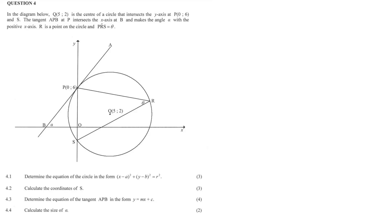Question 4.1. In the diagram below, Q has the coordinates x equals 5 and y equals 2, and it's the center of a circle that intersects the y-axis at P, P having coordinates x equals 0 and y equals 6 and S. Now the tangent APB at P intersects the x-axis at B and makes an angle alpha with the positive x-axis.